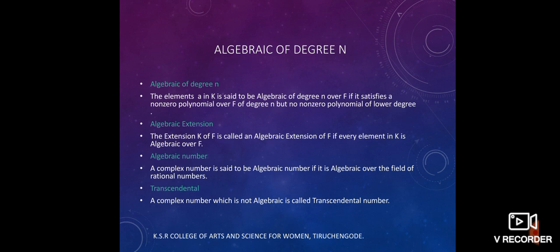Algebraic of degree N. The element A in extension K is said to be algebraic of degree N over the field F if it satisfies a non-zero polynomial over the field F of degree N, but no non-zero polynomials of lower degree.